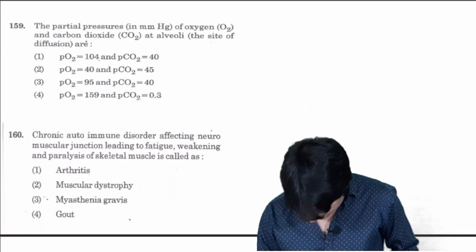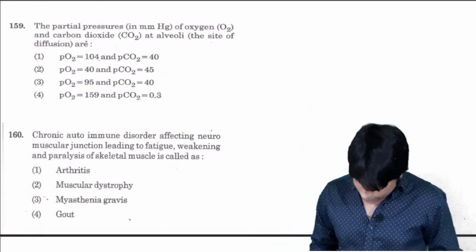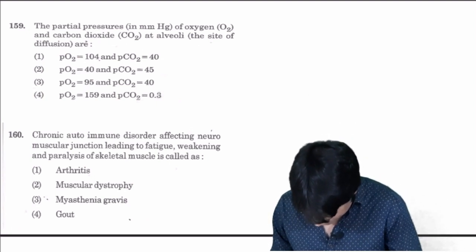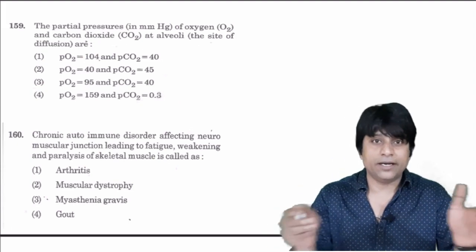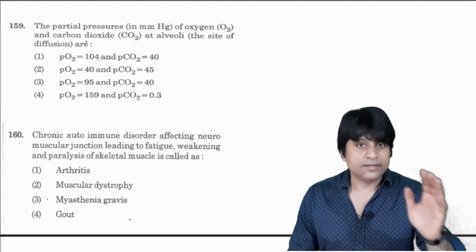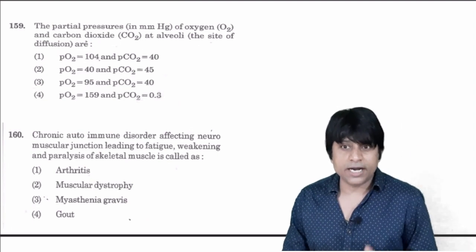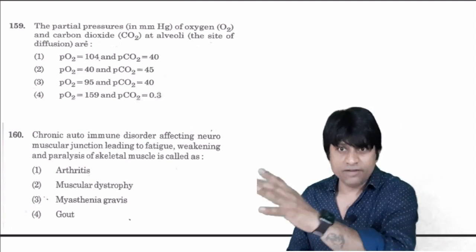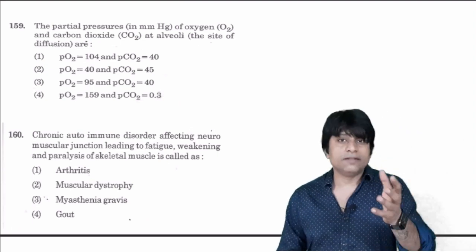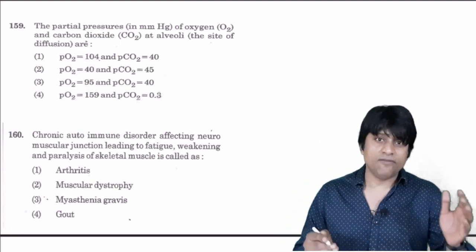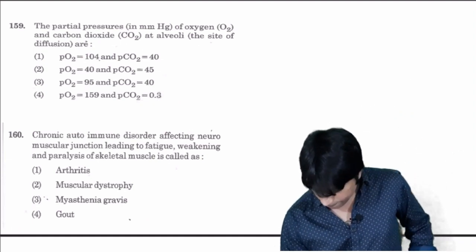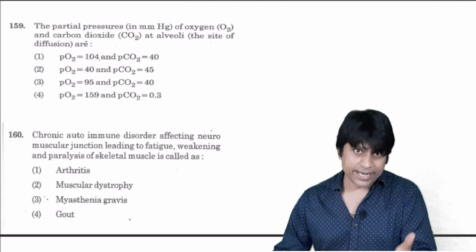The partial pressure in mm of mercury of oxygen and carbon dioxide at alveoli. There is a chart in NCERT - in the atmosphere it is 159, then in the alveoli it becomes 104, in the oxygenated blood it becomes 95. At the respiratory surface called alveoli, always the partial pressure of oxygen is high which is 104 and carbon dioxide is less which is 40. Answer is one.